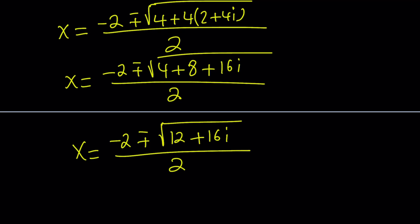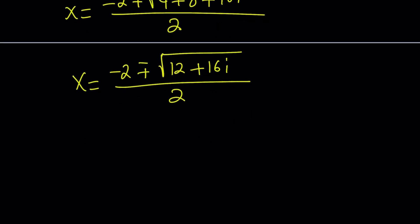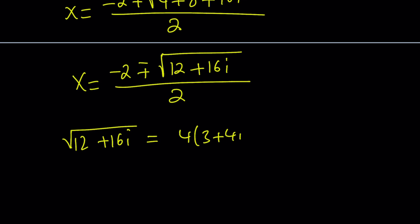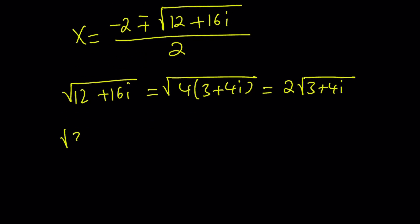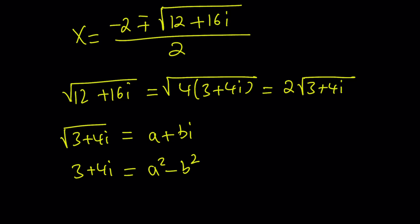Now the most important part: how do you take the square root of 12 plus 16i? First, factor out a 4 — which comes out as a 2 — so we just need to square root 3 plus 4i. To do that, set the square root of 3 plus 4i equal to a plus bi, then square both sides. That gives a squared minus b squared plus 2abi.